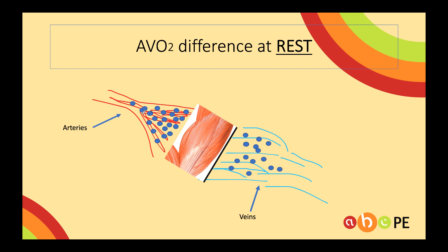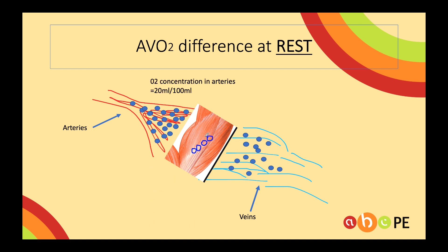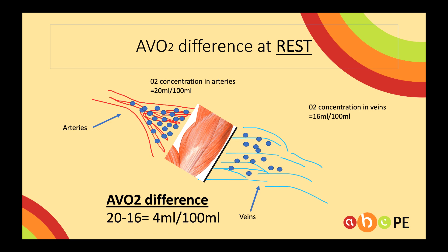AVO2 difference is the difference in oxygen concentration between the arterial blood and the venous blood, with the muscles in between. When we're at rest, we don't demand much O2 because our energy demands are pretty low. The oxygen concentration in our arteries is about 20 mils of oxygen per 100 mils of blood. Since we don't need much oxygen at rest, we don't take much out of the blood, so the oxygen concentration in the veins is still pretty high at about 16 mils per 100. That gives an AVO2 difference of about 4 mils per 100 mils of blood.